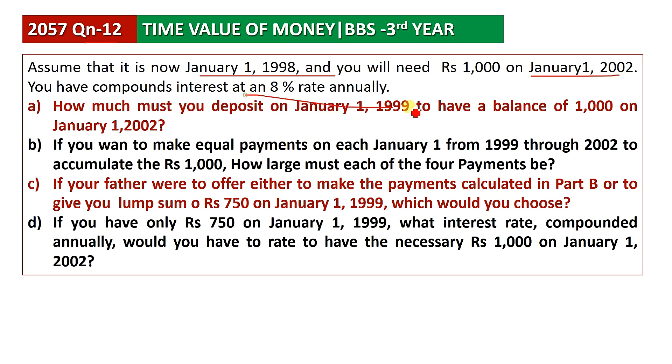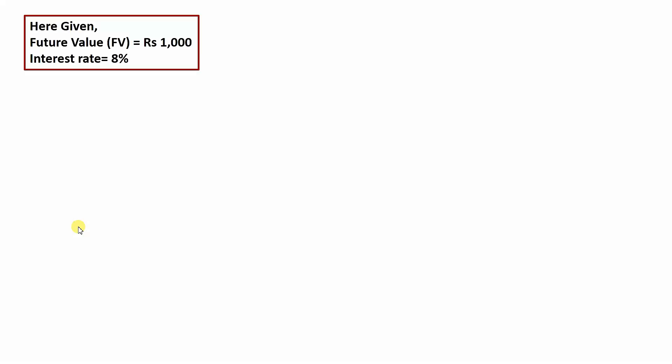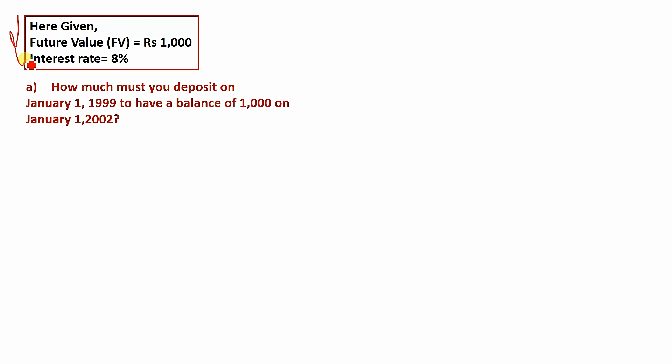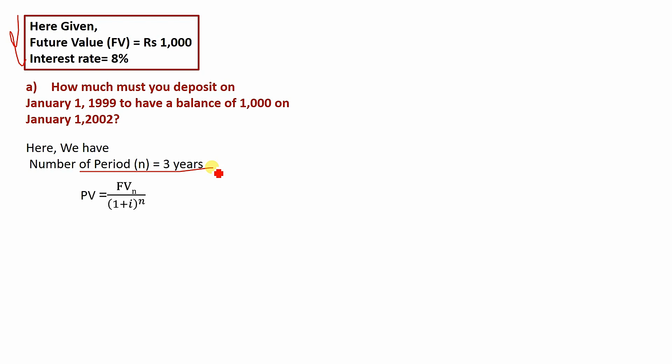The interest rate is 8% across these three sub-questions. Let me explain the first sub-question: the future value is $1,000. The question asks how much you deposit on January 1st, 1999 to have a balance of $1,000. The first question deals with a $1,000 future value target at the given interest rate.